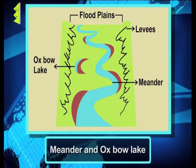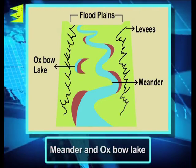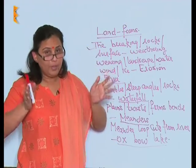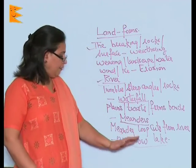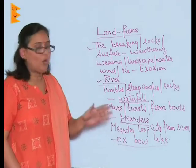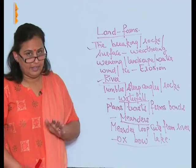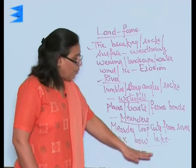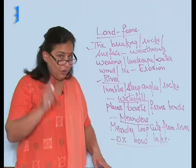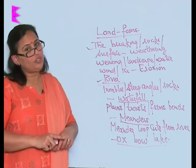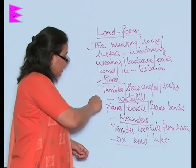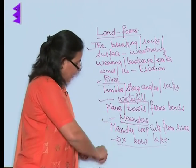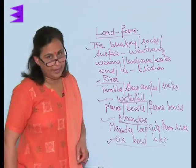When the meander loop cuts off from the river, it forms a cut-off lake, also called an oxbow lake. So we have seen three functions of the river: making a waterfall, making a meander, and making an oxbow lake.